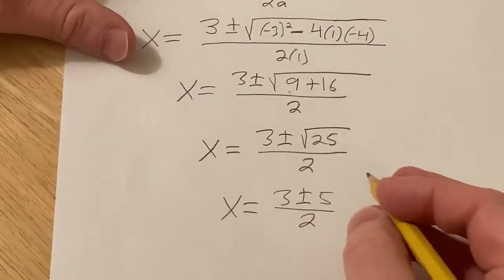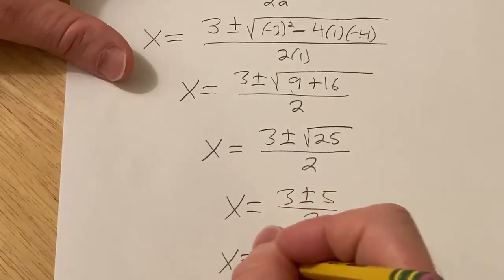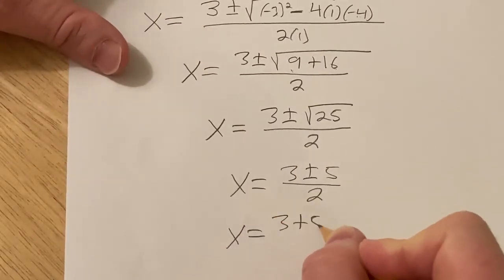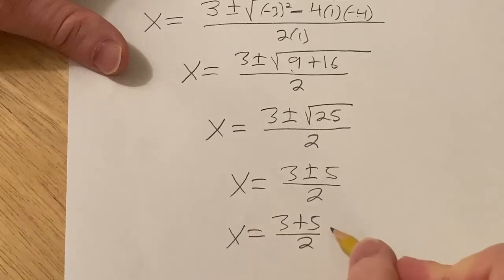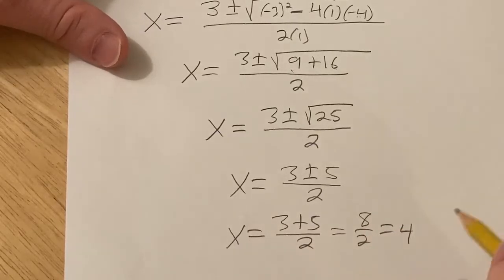So now we have two answers and we just have to separate it. So the first one will be x equals 3, let's do the plus first, plus 5 over 2, which is 8 over 2, which is 4. So that's our first answer.